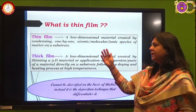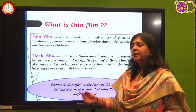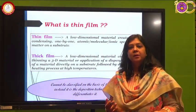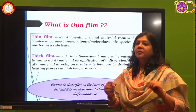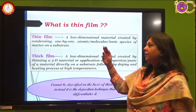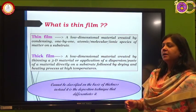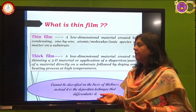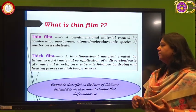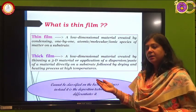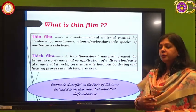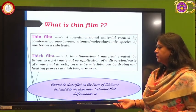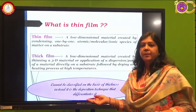Nanothin films are categorized into two categories: first as thin films and second as thick films. The difference between thin and thick films depends upon the deposition techniques rather than the film thicknesses. A thin film is a low dimensional material created by condensing or depositing atomic or molecular species one by one, whereas thick films are created by thinning a 3D material or by dispersion directly onto the substrate. So we cannot classify nanothin films on the basis of their thicknesses.